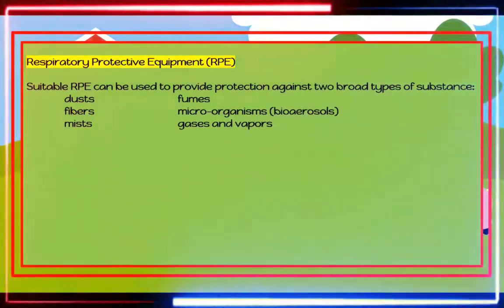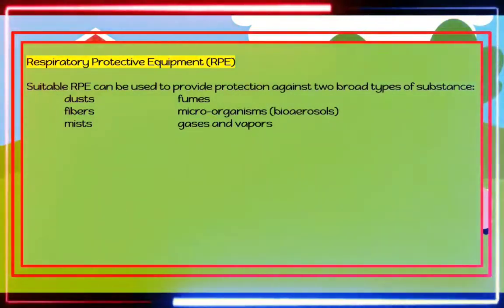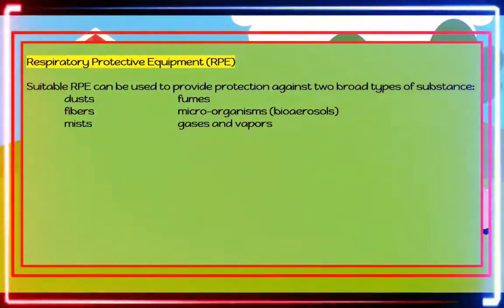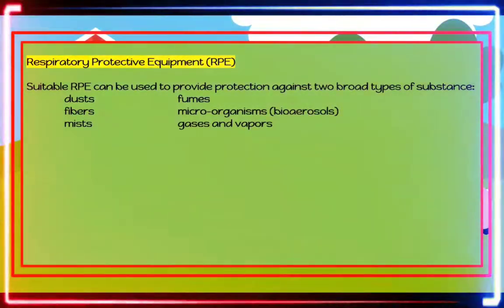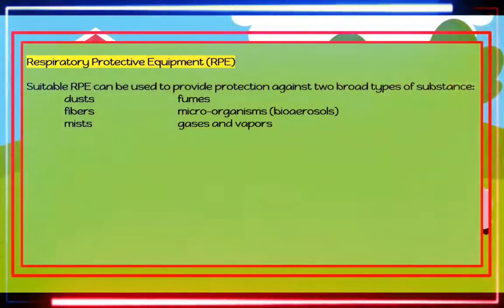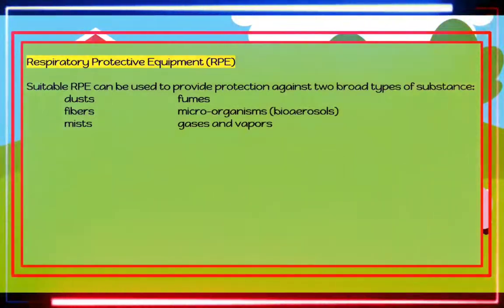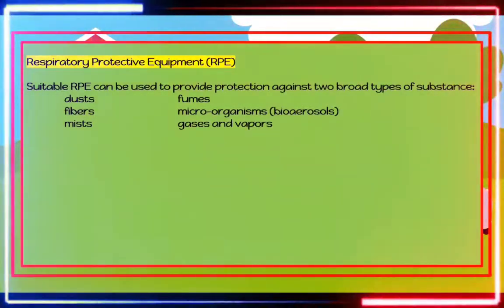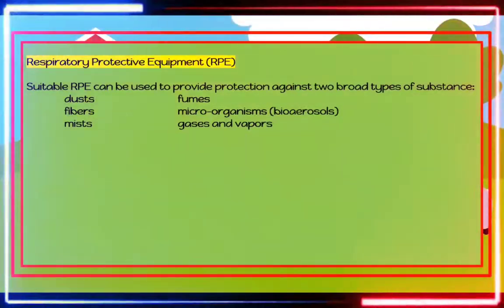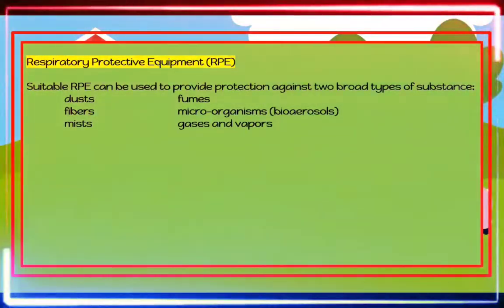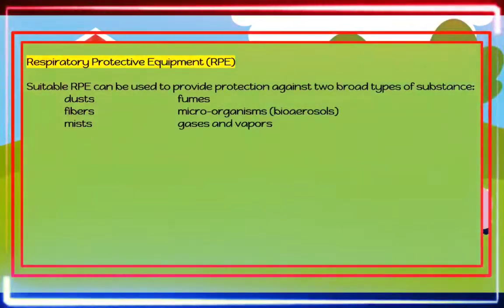A well-fitted disposable respirator conforming to BS EN 149:2001 will protect against dust and fibers. A powered helmet to BS EN 12941:1999 with a correct filter may be more appropriate for people with beards or in many work situations where a disposable respirator is unsuitable. RPE with a high level of protection is necessary for very dusty jobs or where there is a high risk of occupational asthma or farmer's lung, for example when cleaning grain stores or poultry houses.